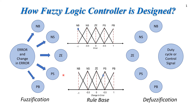And the rate of change of error is lying in the positive small category. So now both of these values will go to the rule base. The rule base decides that a certain combination of error and change in error demands a certain output from the controller.